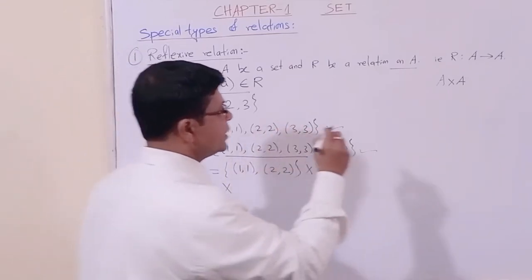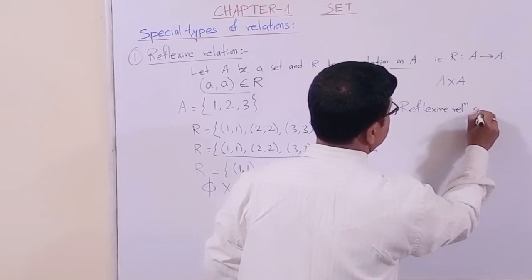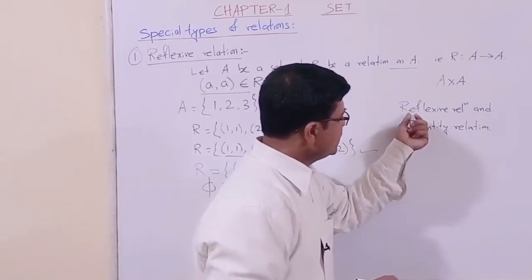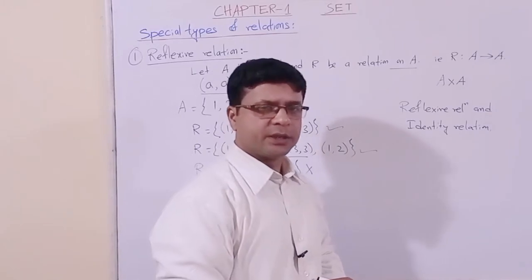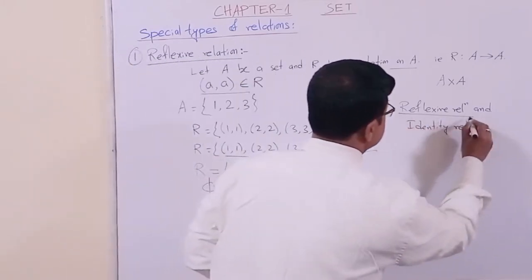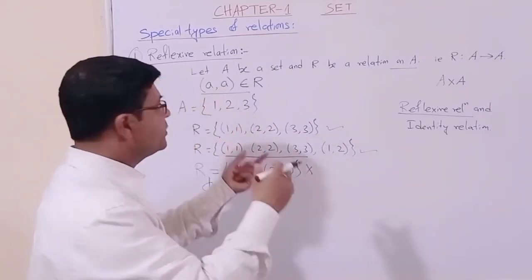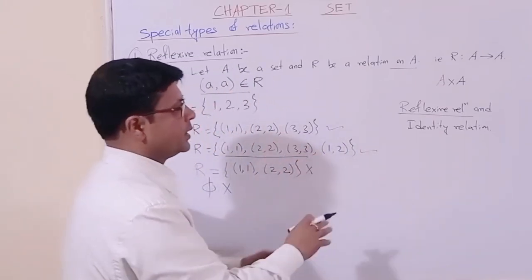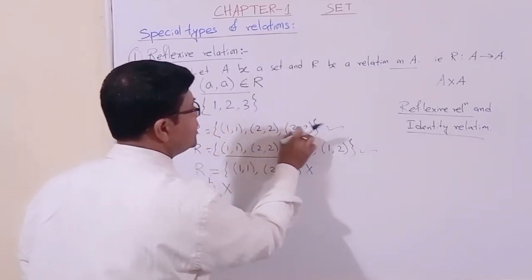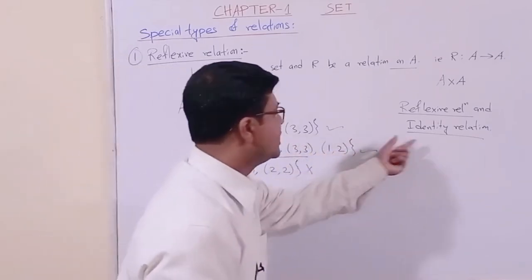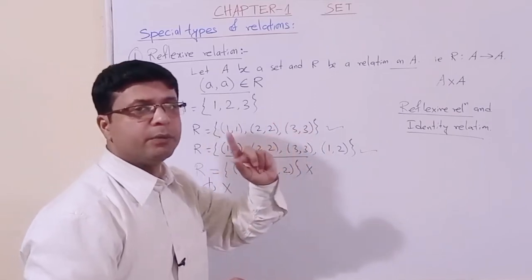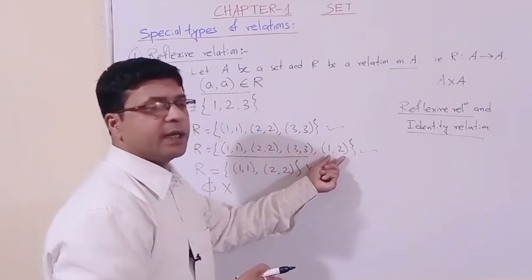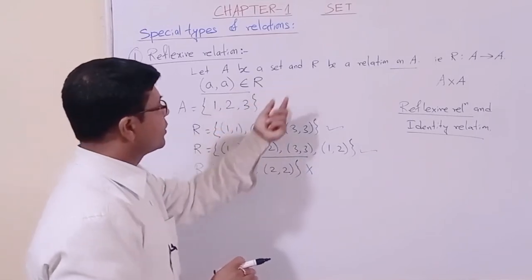Sometimes students are confused between reflexive relation and identity relation. In a reflexive relation, the pairs (a,a) — that is (1,1), (2,2), (3,3) — must be present, but extra elements may also be present. In an identity relation, only the doublets (1,1), (2,2), (3,3) should be present — no other elements are allowed outside of these.